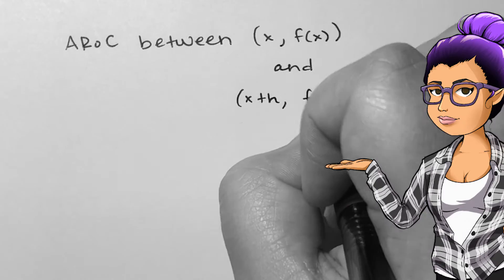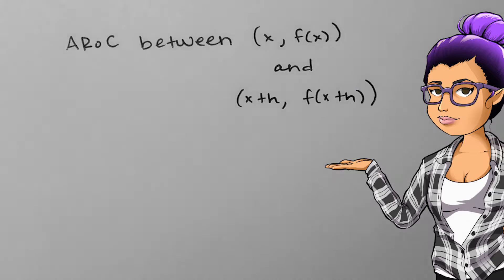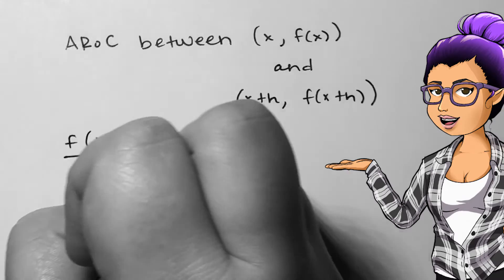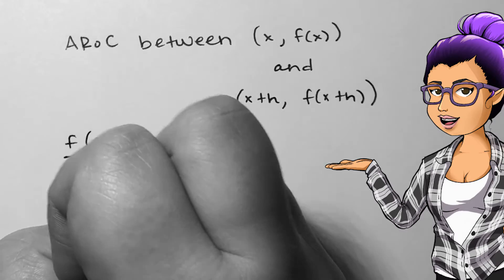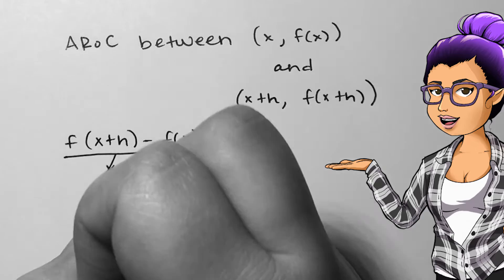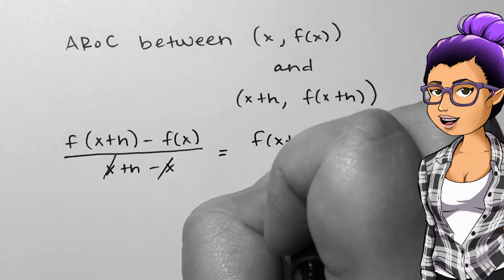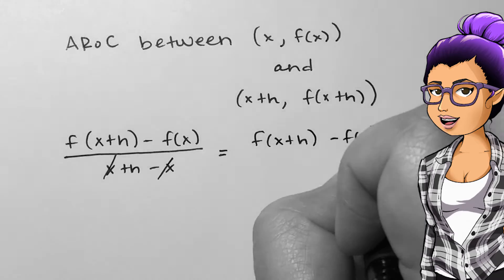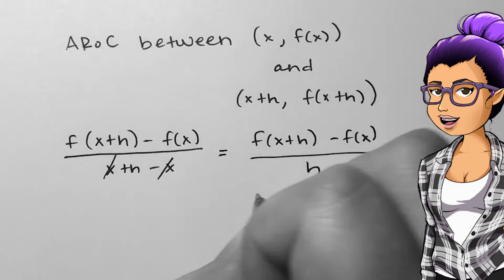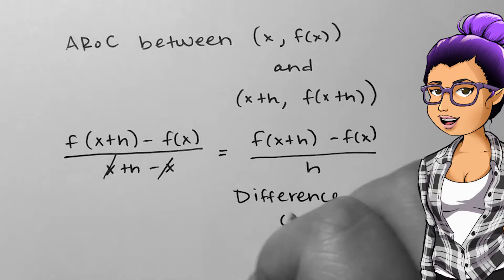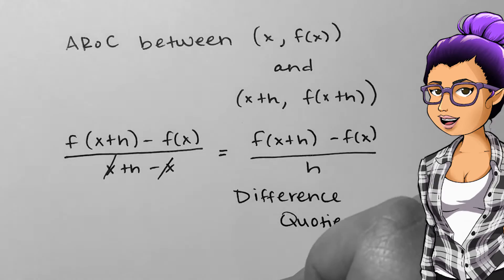The average rate of change between these two inputs would be f of x plus h minus f of x, all over x plus h minus x. This simplifies down in the denominator to be only h. This is our difference quotient.